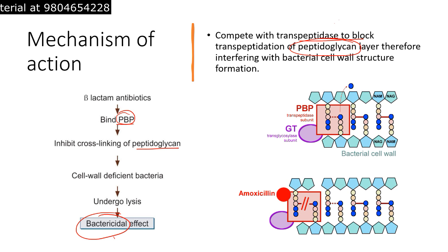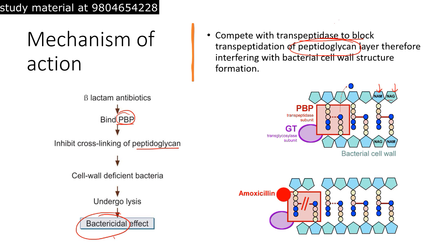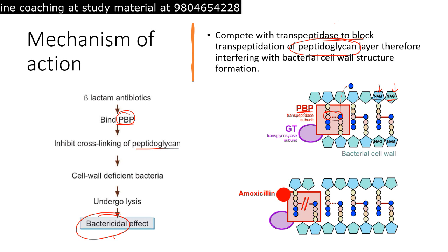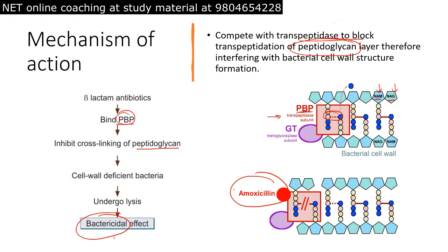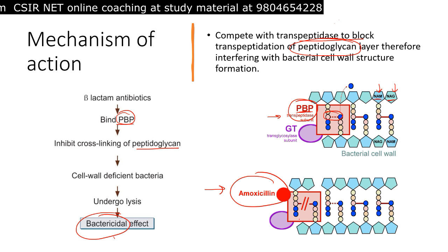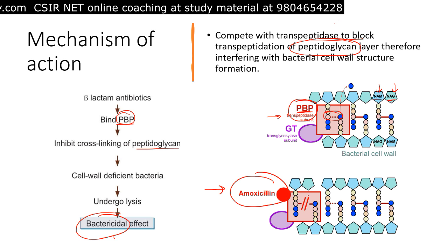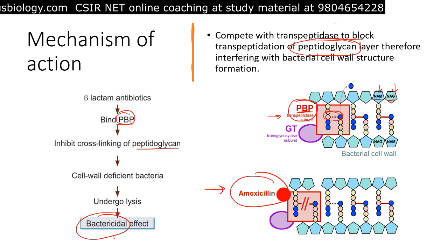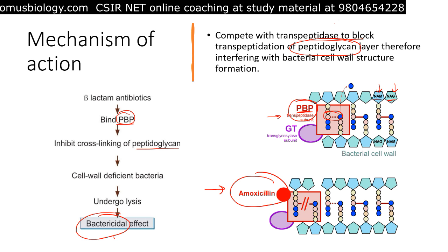The peptidoglycan wall contains structural components known as NAM (N-acetylmuramic acid) and NAG (N-acetylglucosamine). NAM has polypeptide sequences from opposite ends connecting together in a transpeptidation reaction, which is catalyzed by the PBP protein known as transpeptidase. Amoxicillin prevents and inhibits the function of PBP, resulting in no cross-linking between NAM subunits. As a result, the peptidoglycan structure is destabilized, the bacterial cell wall is degraded, and a bactericidal effect occurs.